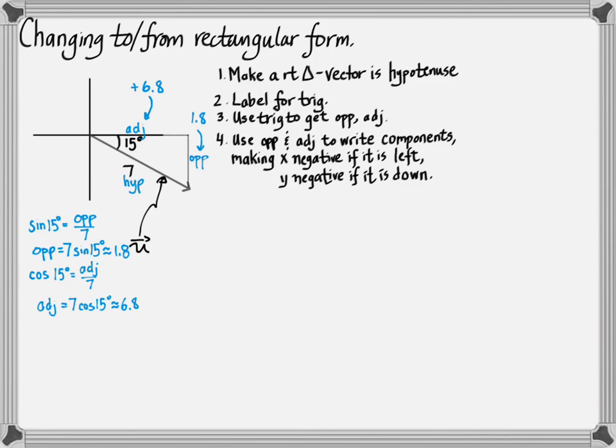But the y component, this 1.8, which we figured out down here, is going down. Because it's going down like this. So that means y is negative when it's going down. That means this y component has to be negative. And there we have our answer. The rectangular component form for this vector u is 6.8 comma negative 1.8.